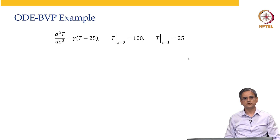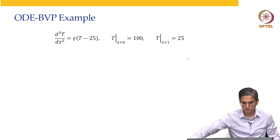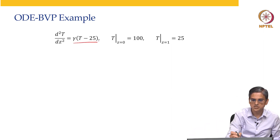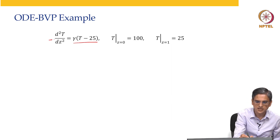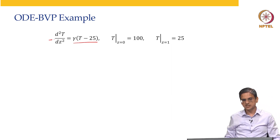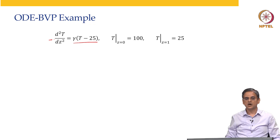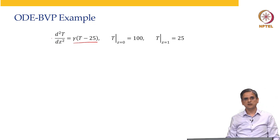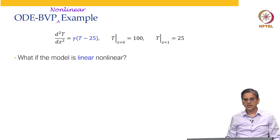This was the ODE boundary value problem covered in the last three lectures. This is a linear problem. Why is it linear? Because this particular function is linear and we do not have anything multiplying the d²T/dz² term. If it is a scalar multiplying d²T/dz², of course it is not a problem. But if it is a function of T multiplying d²T/dz², that is a non-linear equation. So what if the model is non-linear?